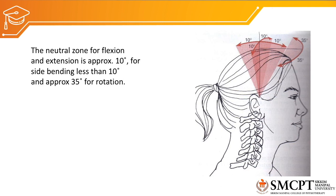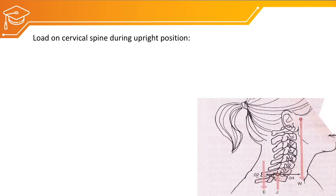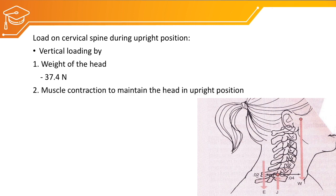The range of motion available in the neutral zone — without any passive resistance — is flexion of 10 degrees, extension of 10 degrees, side flexion of 10 degrees, and 35 degrees of rotation. During upright position, vertical loading is by the weight of the head, which loads about 37.4 Newtons. Additional loading from muscle contraction to maintain the head upright is about 70 Newtons at the atlanto-occipital joint, and 130 Newtons at the C7-T1 joint.